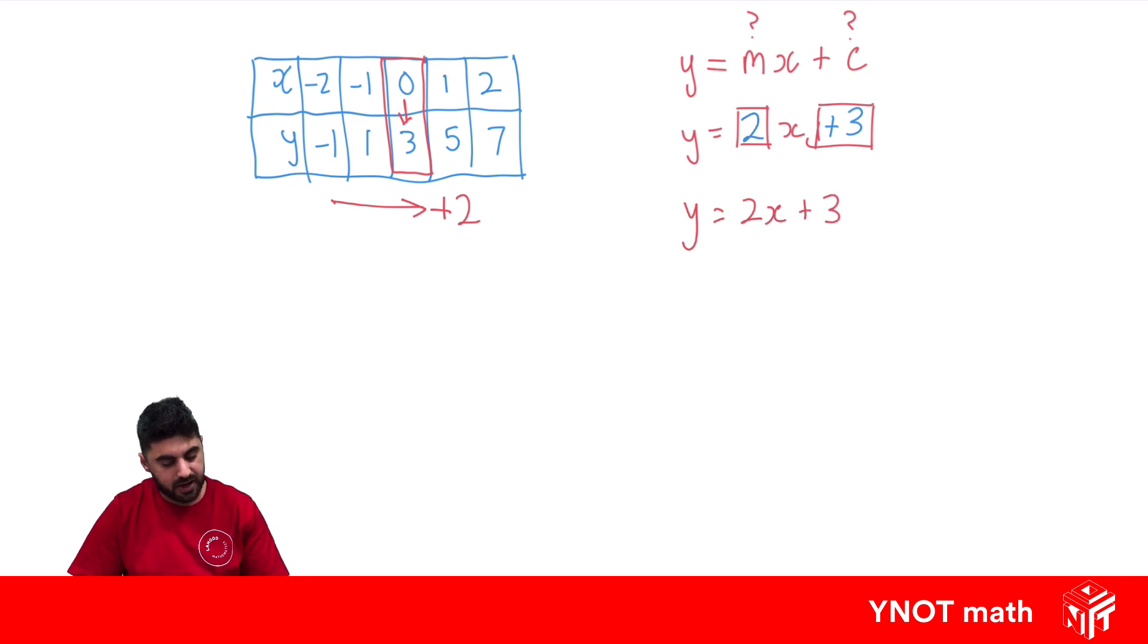You could even test it out with one of the values. Let's test it out with this one over here. So what value of y do we get when x equals 2? It would be 2 times x, which we want to try out 2. 2 times 2 is 4 plus 3. And 4 plus 3 is 7. And that's exactly what we were expecting. So our rule looks pretty good.